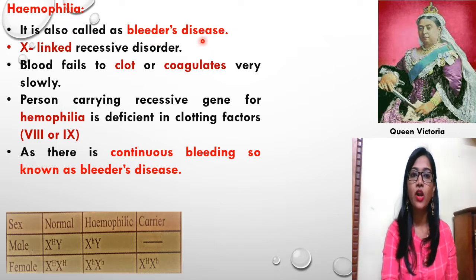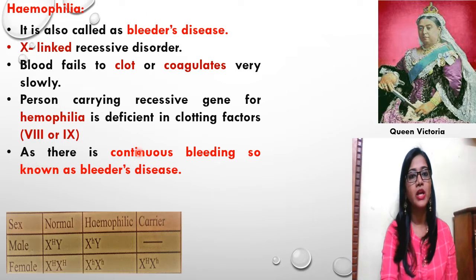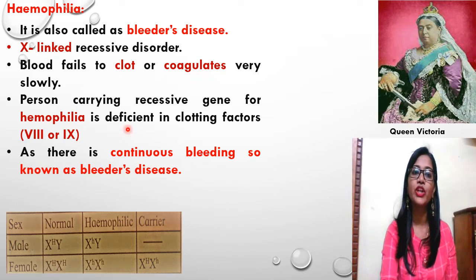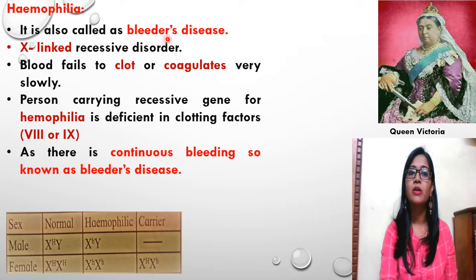Why is it called Bleeder's Disease? Because there is continuous bleeding. When there is an injury in such a person, the blood never clots or never coagulates, so there is continuous bleeding. Because of this process, it is known as Bleeder's Disease.